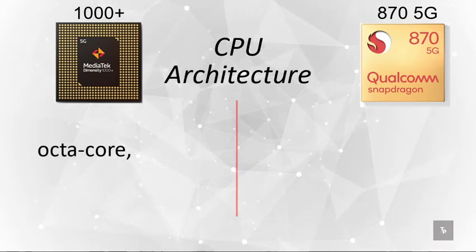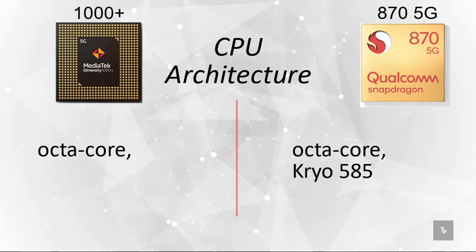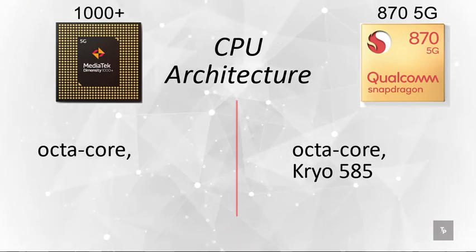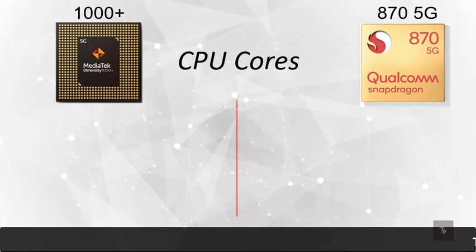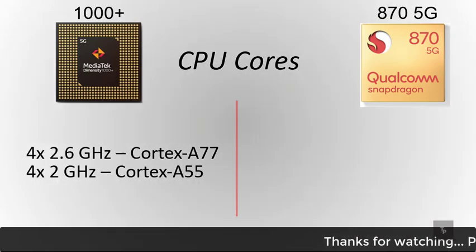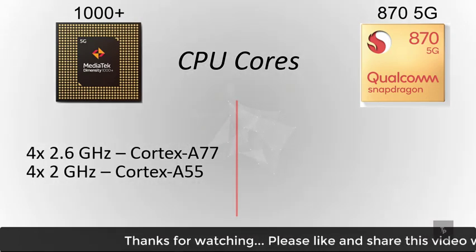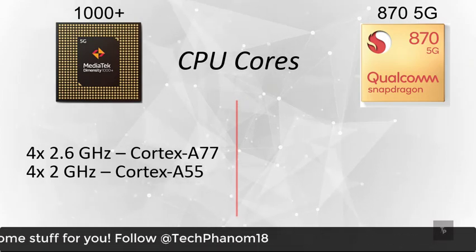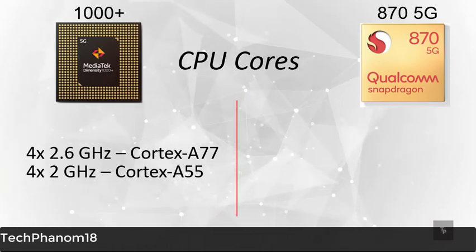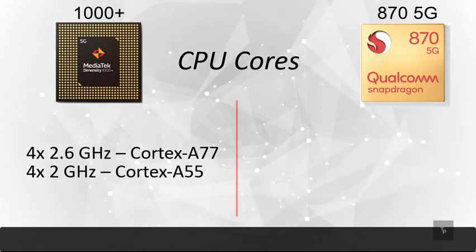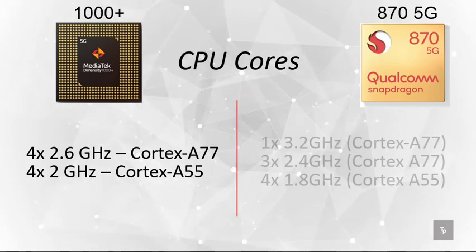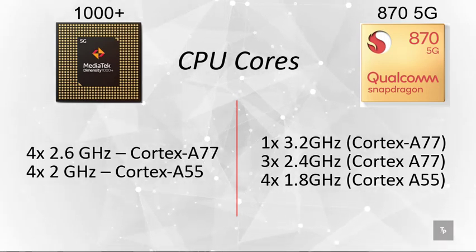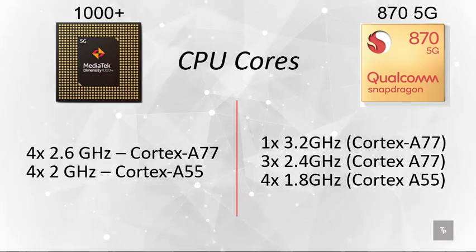For CPU architecture, the MediaTek comes with an octa-core processor, whereas the Snapdragon 870 also comes with an octa-core with Kryo 585. The MediaTek processor has four cores at 2.6 GHz Cortex-A77 and four cores at 2.0 GHz Cortex-A55. The Snapdragon 870 also has an octa-core with one core at 3.2 GHz Cortex-A77, three cores at 2.4 GHz Cortex-A77, and four cores at 1.8 GHz.